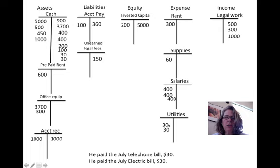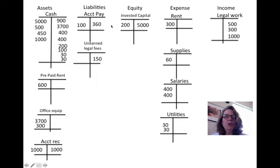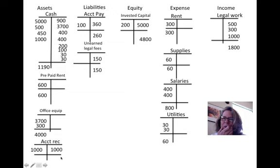Now we're done recording all the transactions. The next step is to close the accounts — we draw lines under everything and calculate balances. Note there's an extra $400 entry that shouldn't be there; that will be deleted. Lines are drawn under everything, balances are calculated, and one account comes to zero which we'll still track.